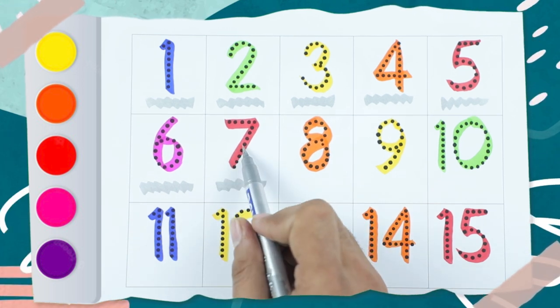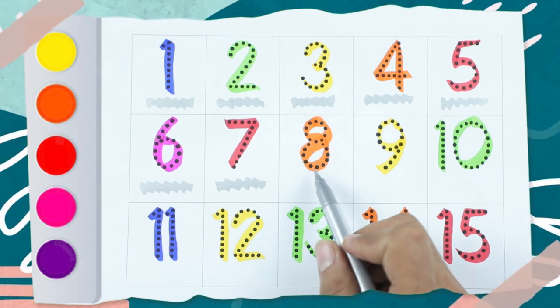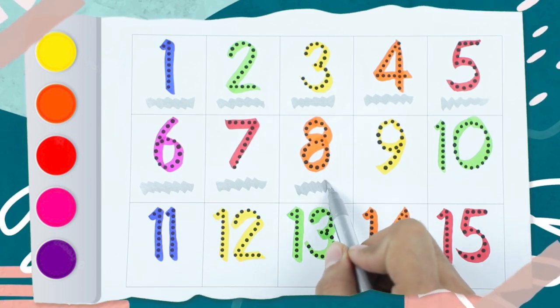Number 7 is red color. Which number? 8. And which color? Orange color, 8.